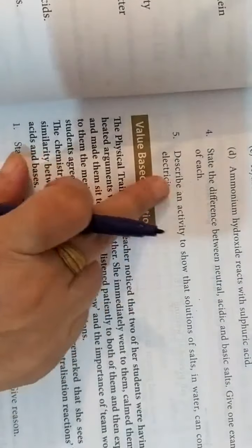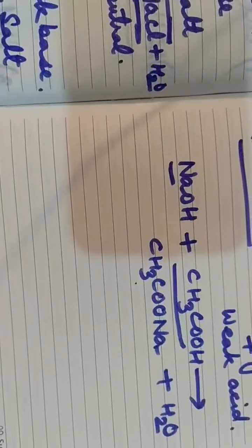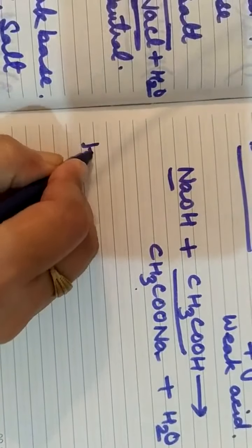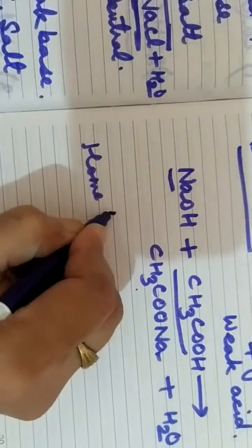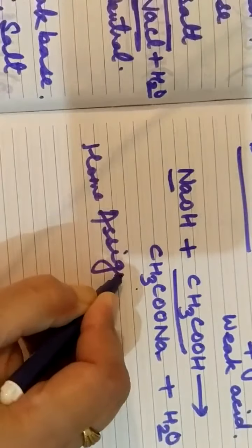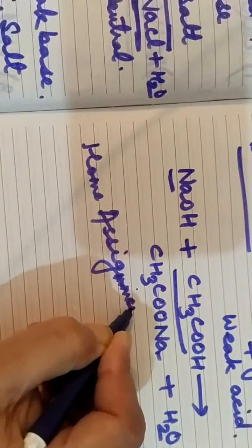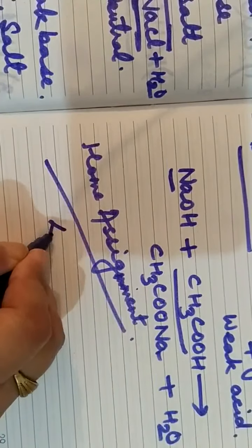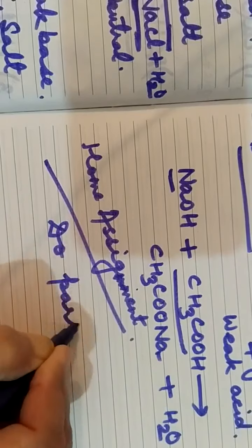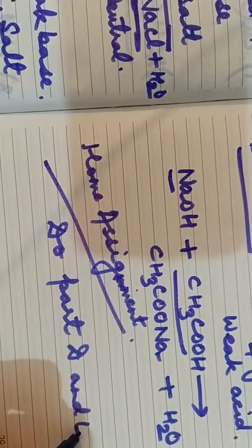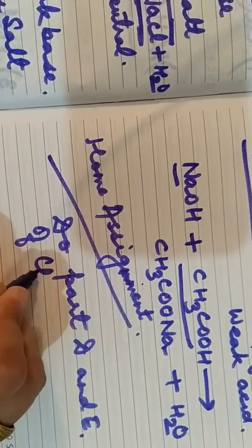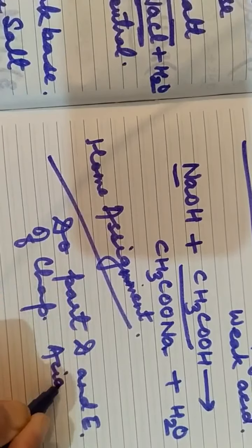The chapter is completed — all parts A, B, C, D and E are done. Now children, note down your home assignment: do parts D and E of chapter Acids, Bases and Salts.